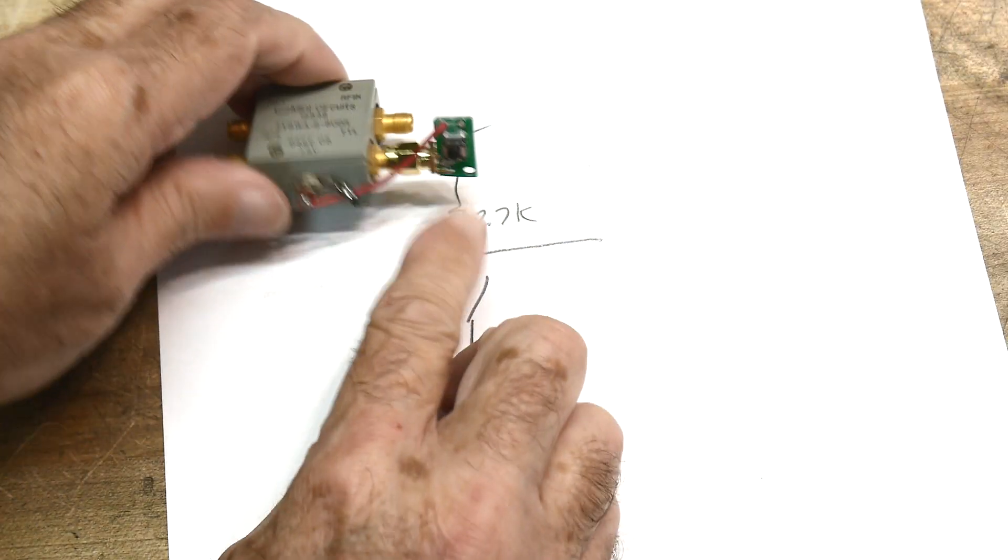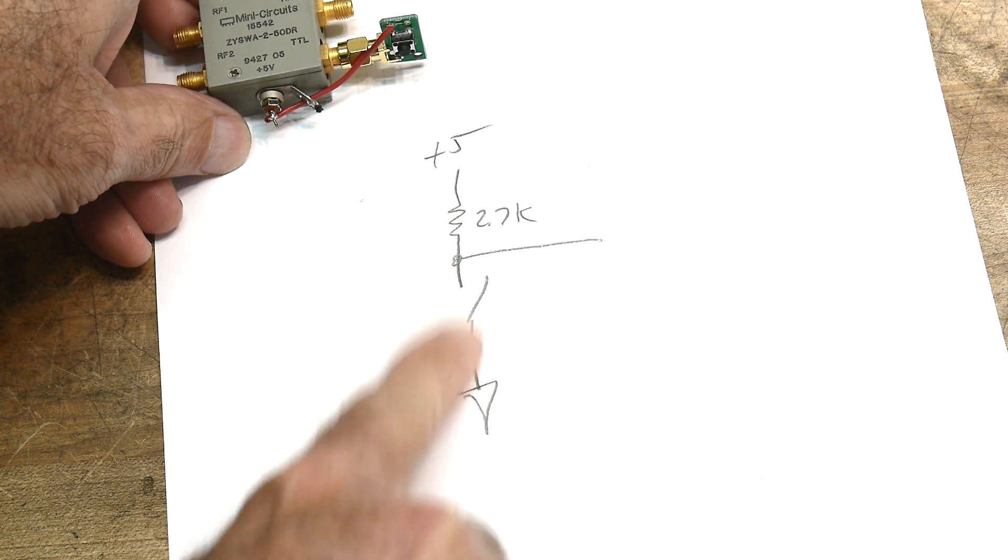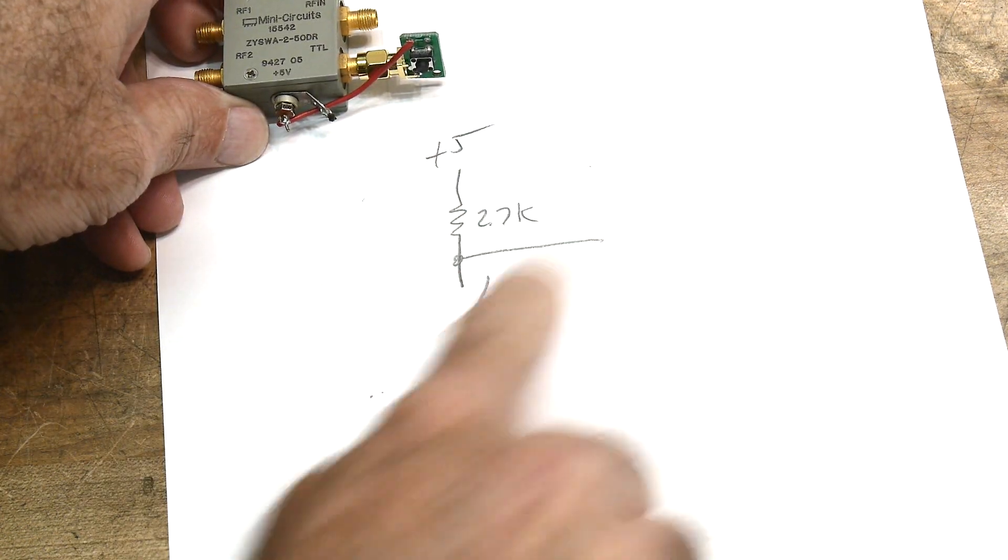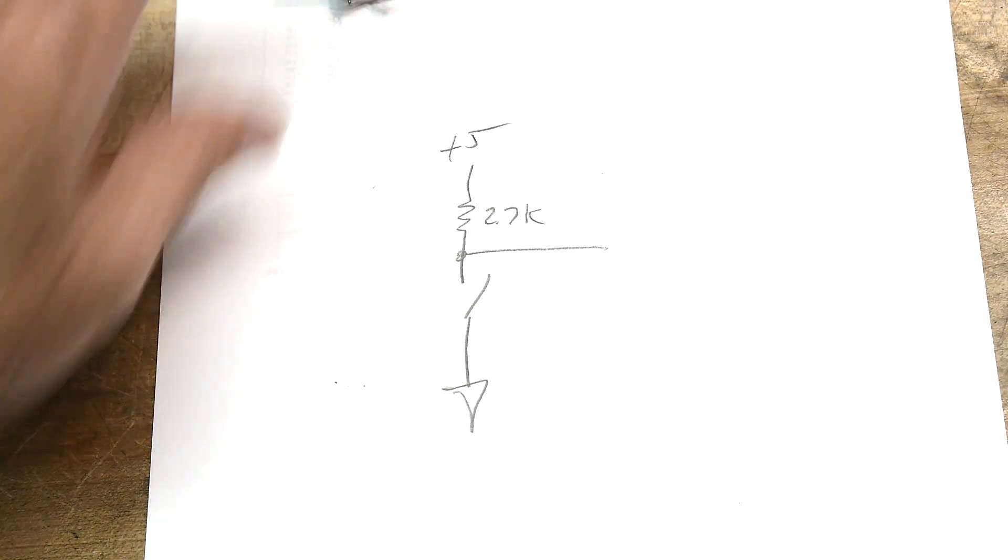I forgot to describe this little circuit that I put on here. It's just a 2.7K pull up to 5 volts and a switch to ground, so I can just toggle the TTL input high or low. So that's all that is.